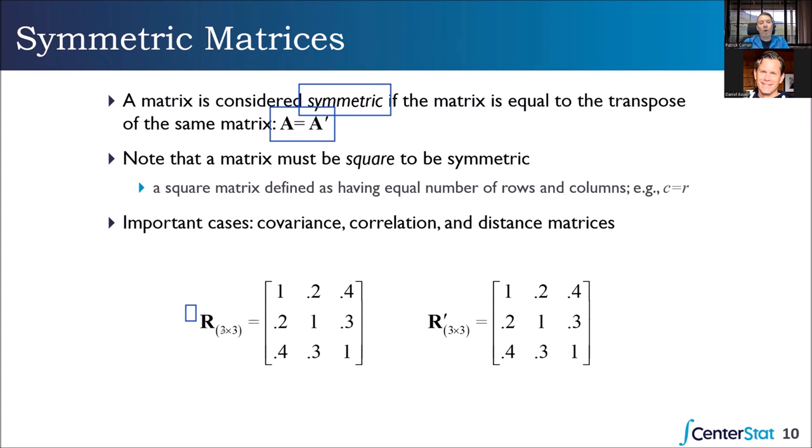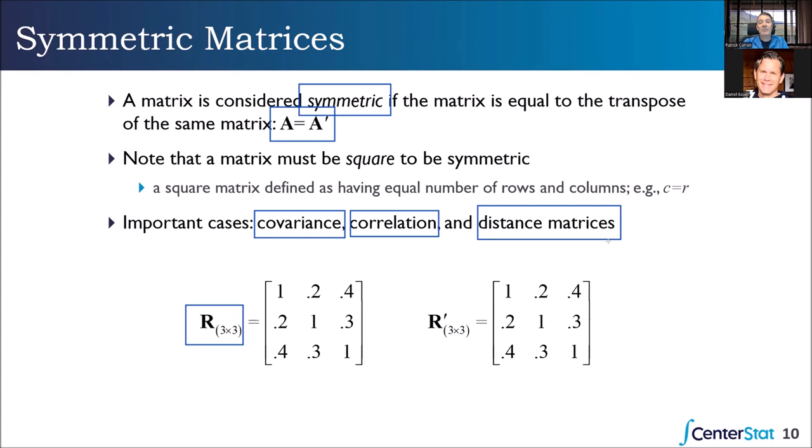Here's a correlation matrix — symmetric matrices include covariance matrices, correlation matrices, distance matrices. You get distance matrices in network analyses, machine learning, and cluster analyses. These are very common.